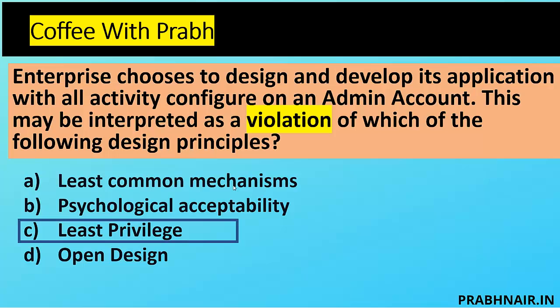That is why the answer is C for Charlie — a violation of the principle of least privilege. Let's move to the next coffee shot.